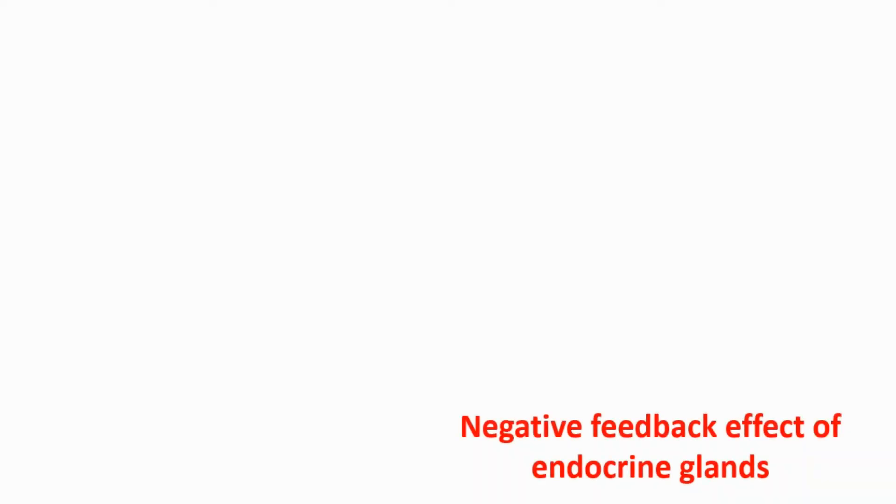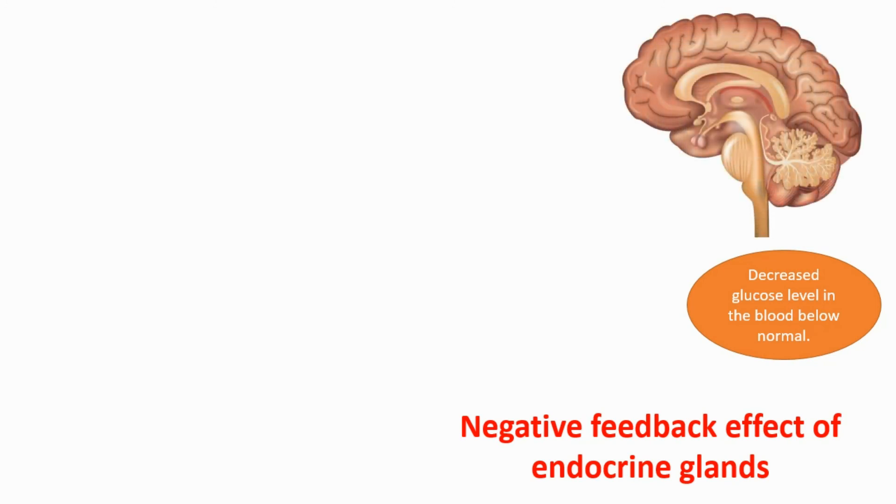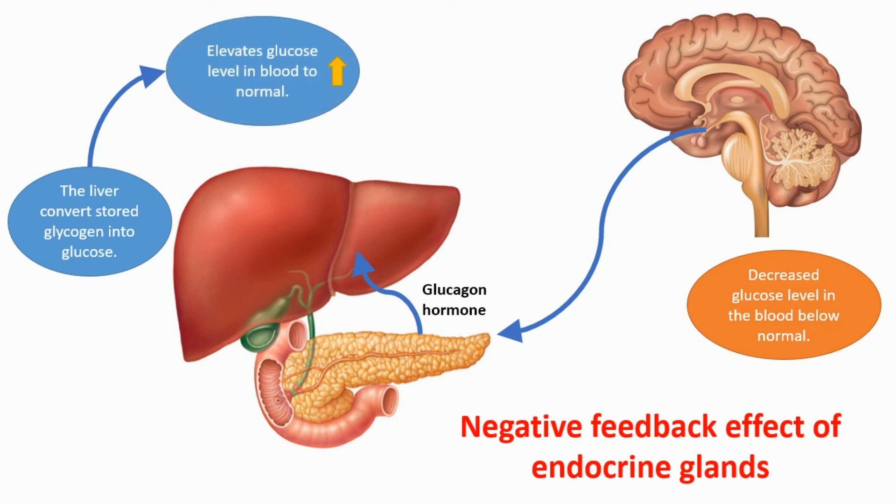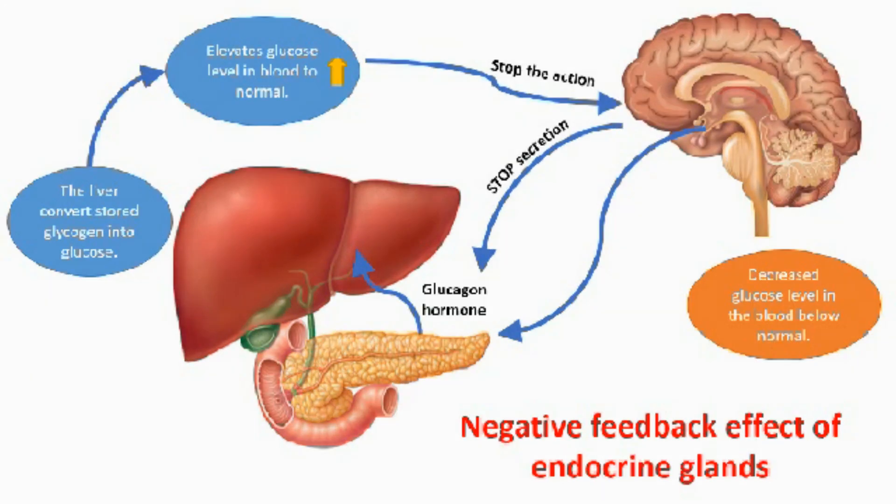The endocrine system has a mechanism called negative feedback mechanism in order to reach homeostasis in the body. To understand this mechanism let's see this example: when the glucose level in the blood decreases below normal level, the hypothalamus secretes regulatory hormone which stimulates pancreas to secrete glucagon hormone. Glucagon stimulates liver to convert the stored glycogen into glucose, so the glucose level increases in blood till the normal. After that the hypothalamus stops secretion which will stop secretion of glucagon hormone and stop the entire process.